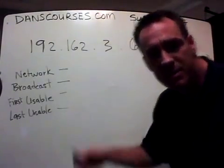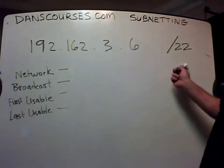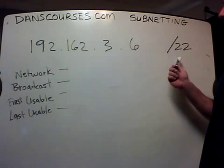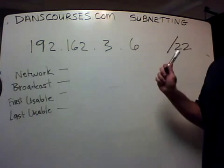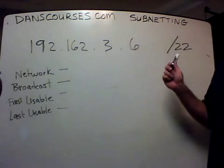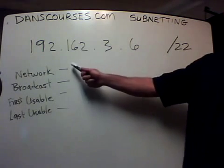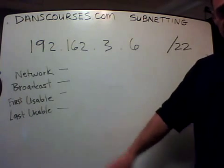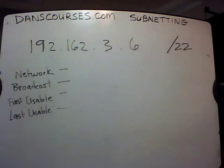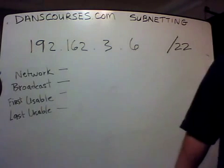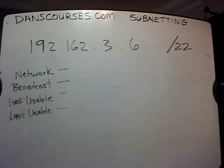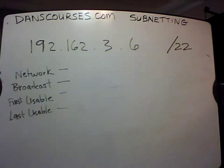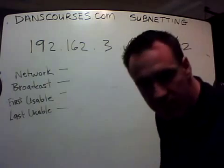Samurai subnetting. We're going to do a slash 22 here. So we're going to basically subnet a class B address, and we're going to find the network address, the broadcast address, the first usable host, and the last usable host. This is on Joey's request. First, we have to find the magic number.